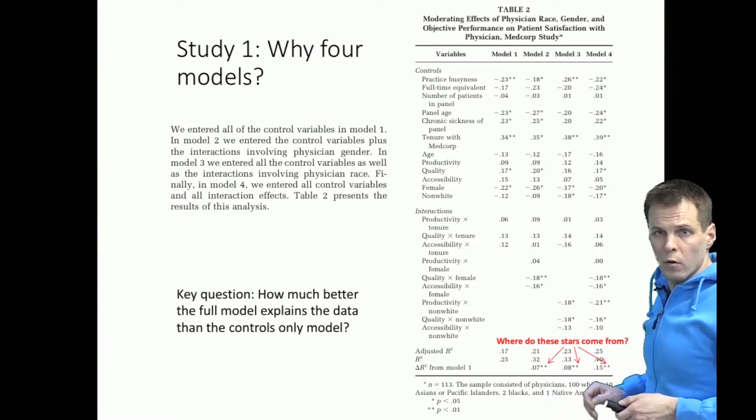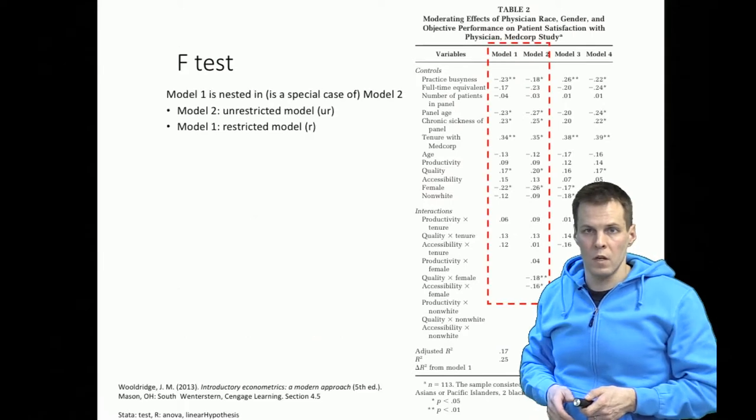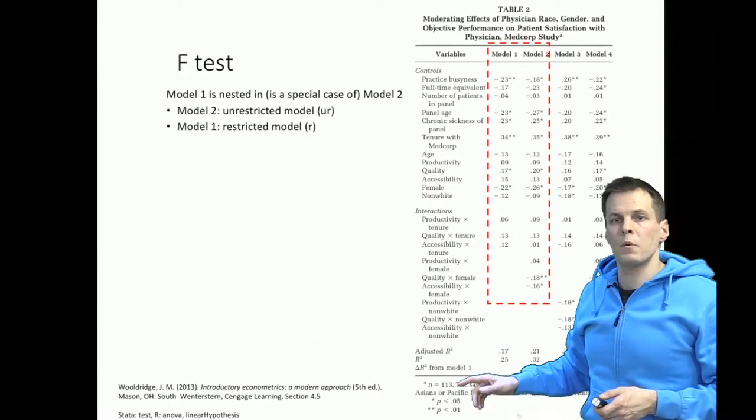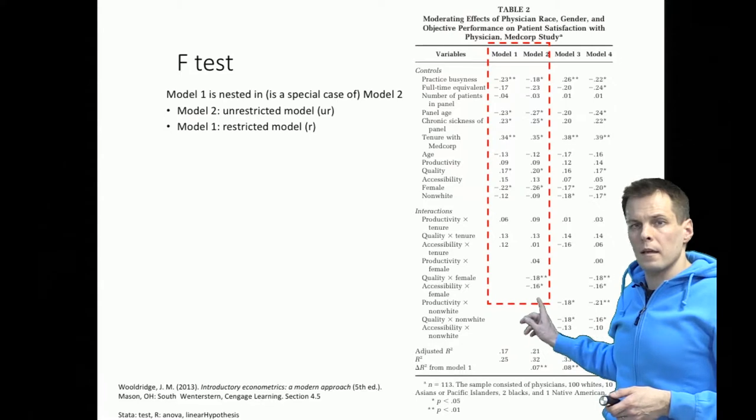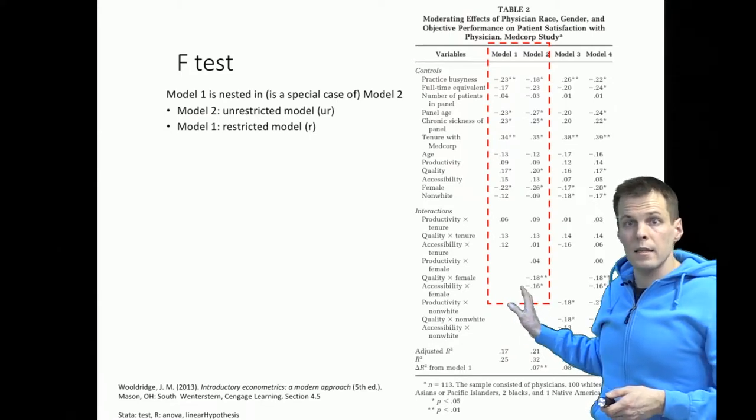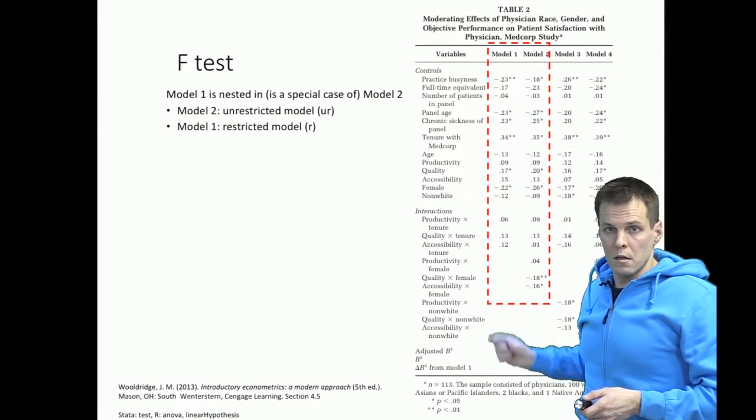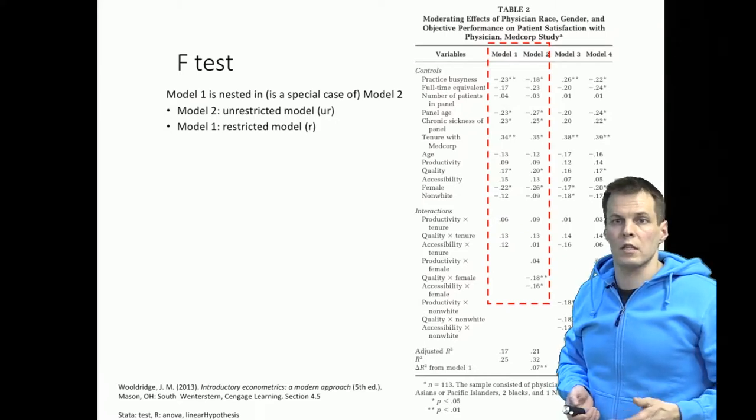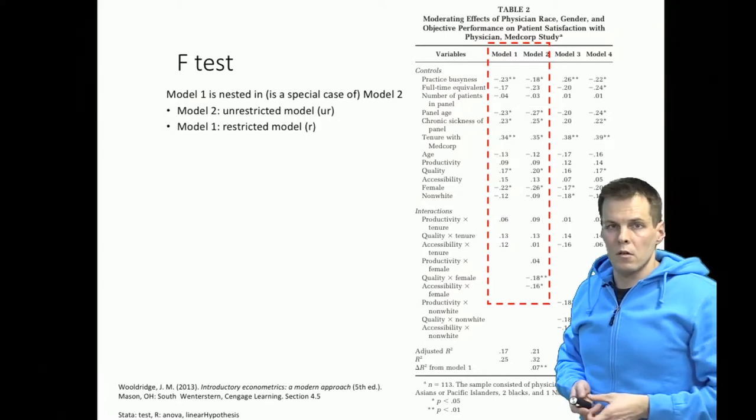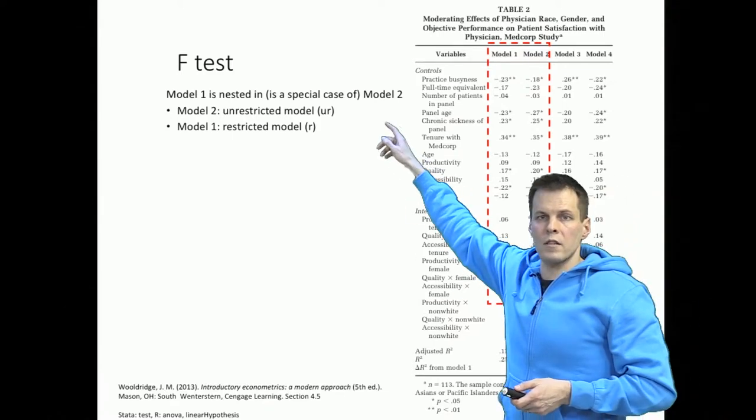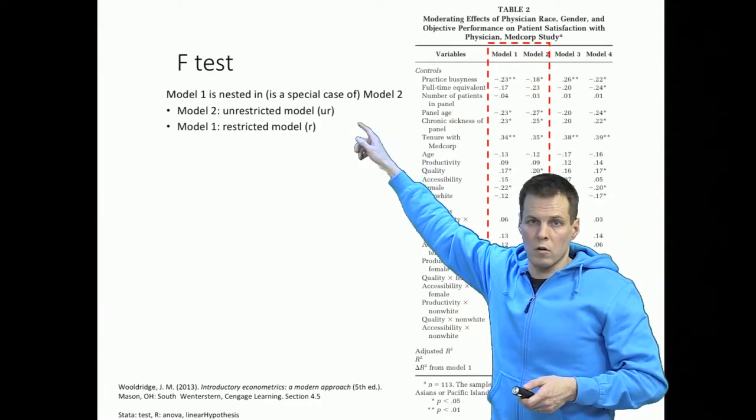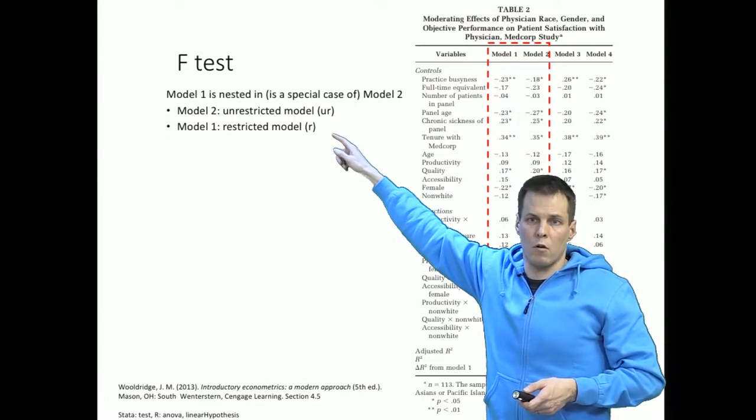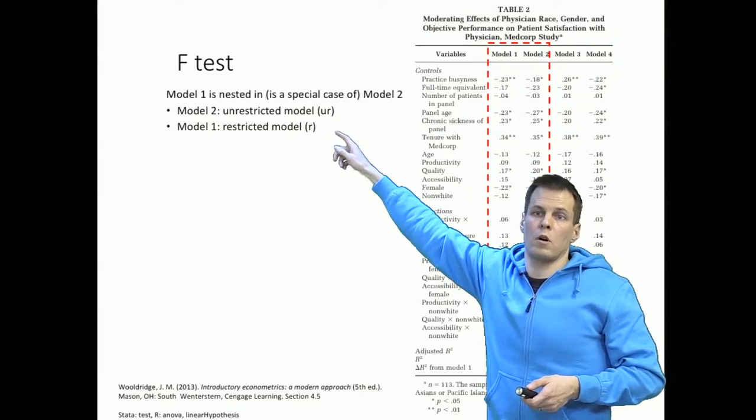We'll look at the logic of the test now. The idea of the F-test between the first two models is that it is a nested model comparison test. One model is nested in another. That means that one model is a special case of another. In this case, model 2 is the unrestricted or unconstrained model. Model 1 is the restricted or constrained model.